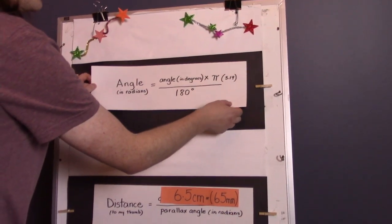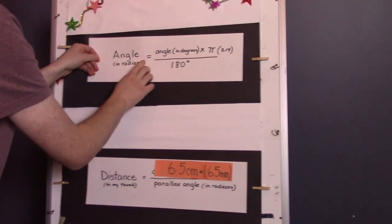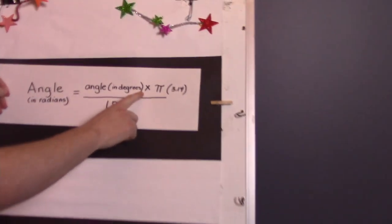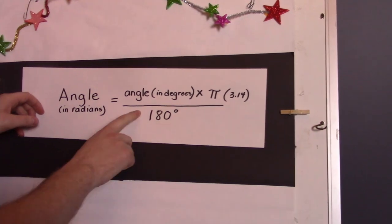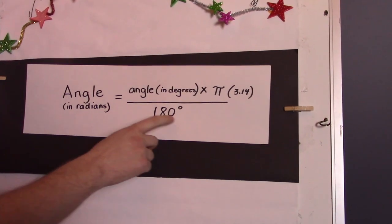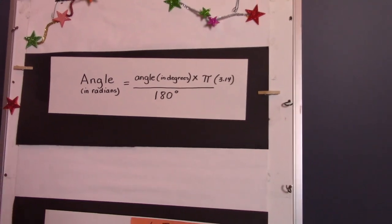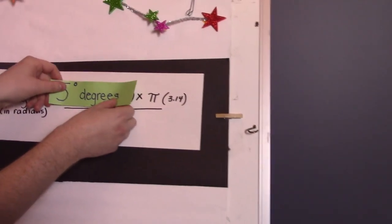Okay, here we have the angle in radians which is equal to the angle in degrees multiplied by pi or 3.14 divided by 180 degrees. So let's get our angle in degrees which we measured to be 5 degrees.